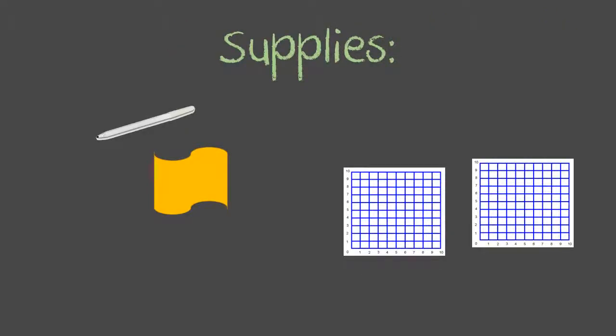The supplies provided in your pouch along with the information sheet and directions are a dry erase marker, eraser, and two Array Around boards.